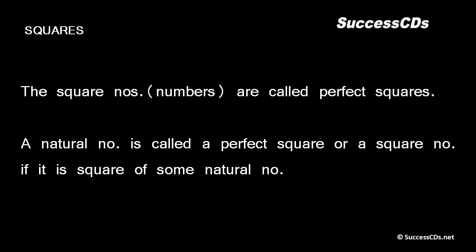The square numbers are called perfect squares. A natural number is called a perfect square when it is the square of some other natural number.